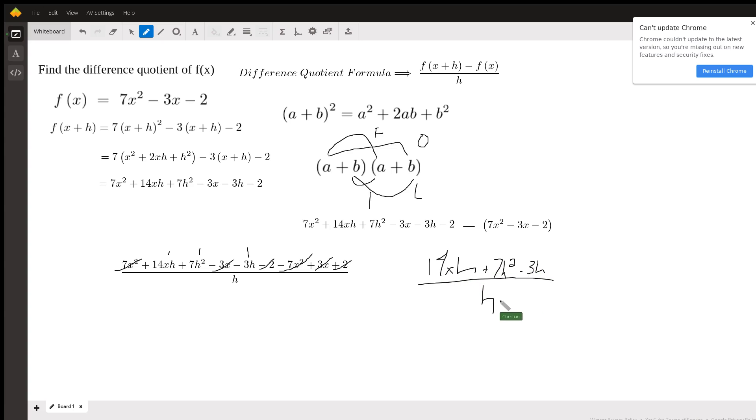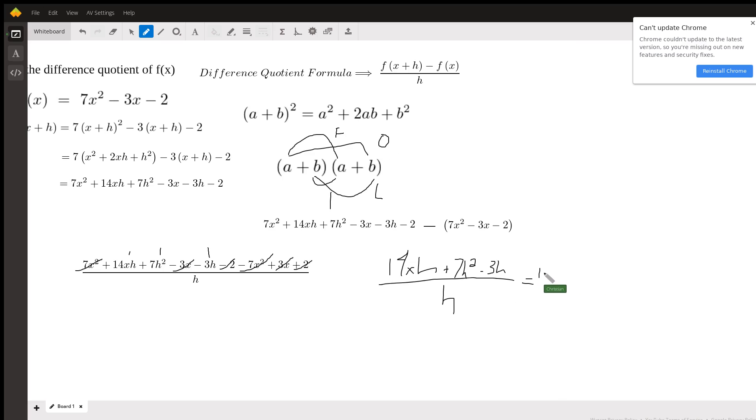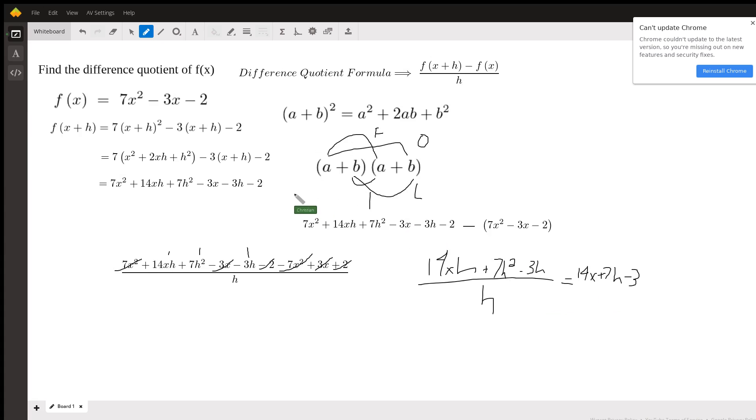So once you do that, your result will be 14x + 7h - 3, and this is your final answer. This is how you find the difference quotient of a function.